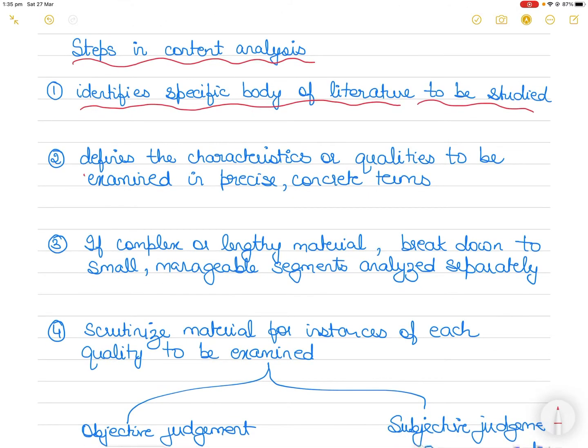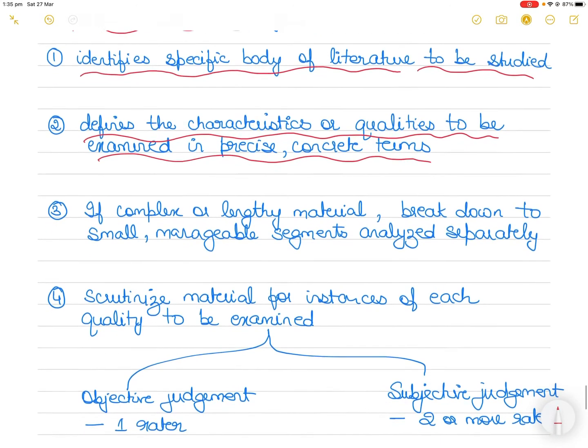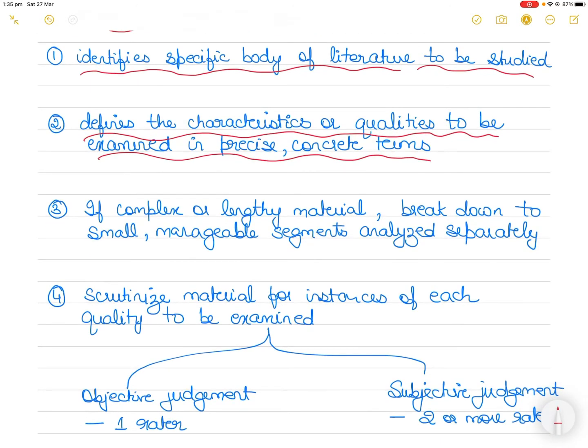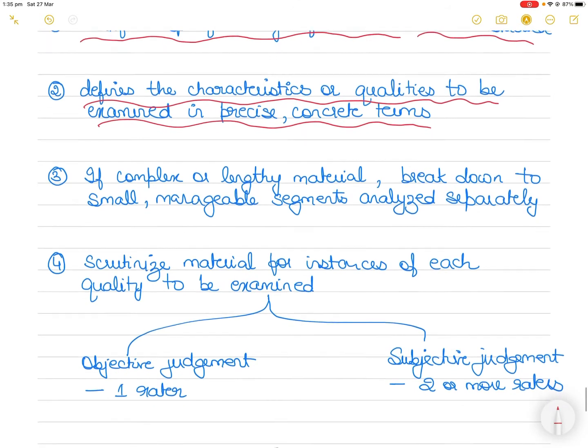Second step is that the researcher defines the characteristics or qualities to be examined in precise, concrete terms. The researcher may identify specific examples of each characteristic as a way of defining it more clearly.